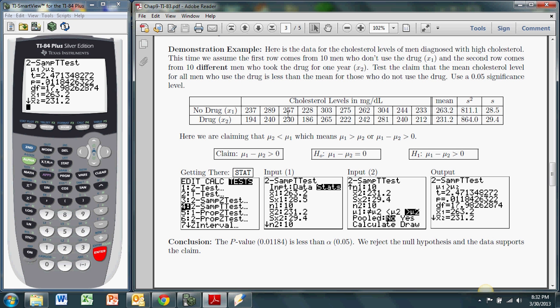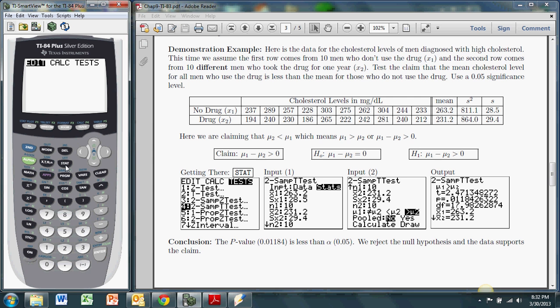And that's pretty easy to do except that you have to type all the data into the TI. So if you were to do that, you'd hit the STAT button, as we so often do. And you'd stay with Edit. And you hit Enter. And here I already put this data into List 1 and List 2. So List 1 is the cholesterol levels for men who did not use the drug. List 2 is the cholesterol levels for men who did use the drug.